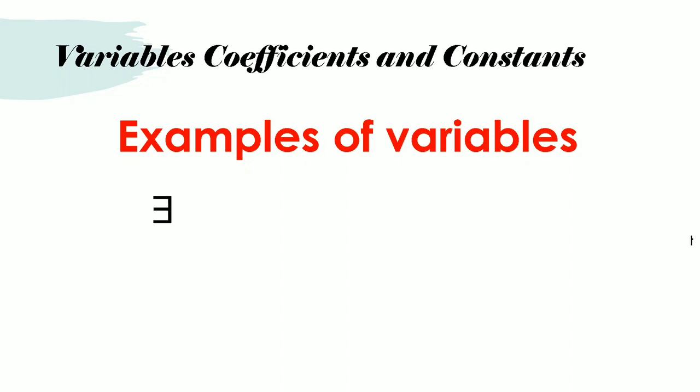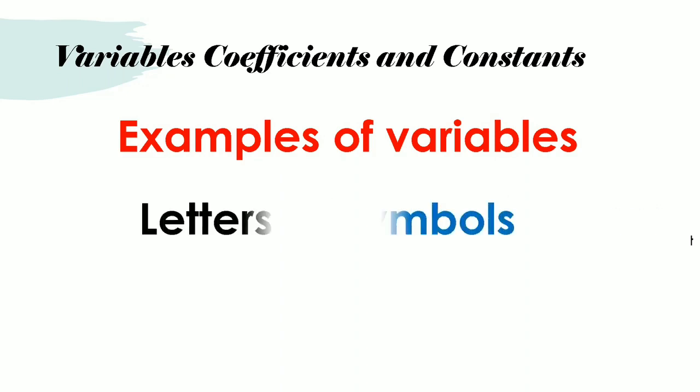But variables can also be symbols, like these. So now we can define what variables are. Variables are a combination of letters of the alphabet or symbols.